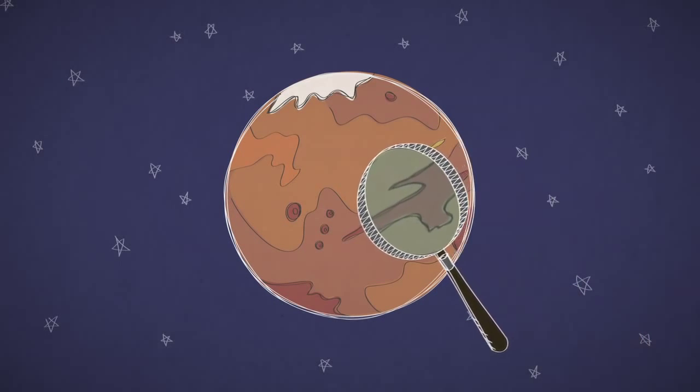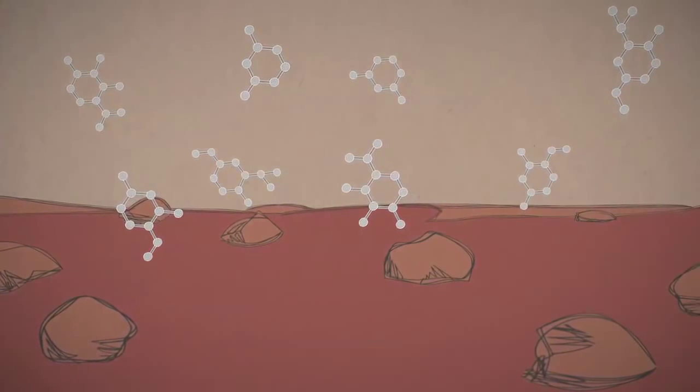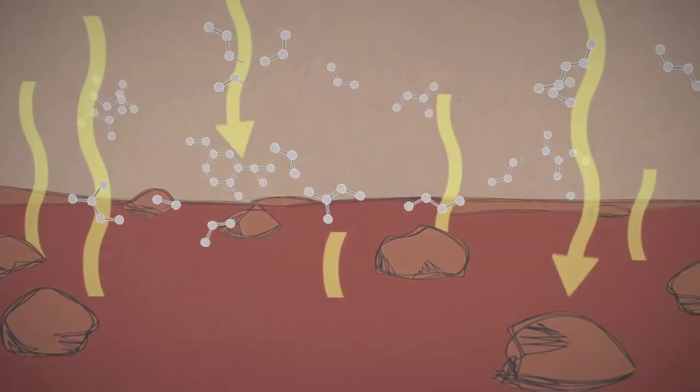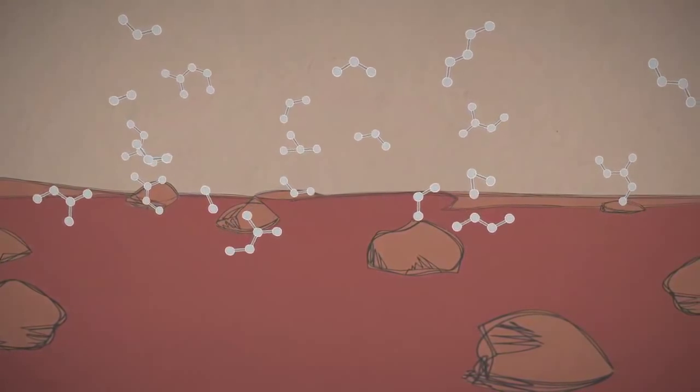But finding organics is hard. That's because organics easily break down when exposed to harsh things like extreme radiation and chemical oxidants that gave the Martian surface its rusty color.